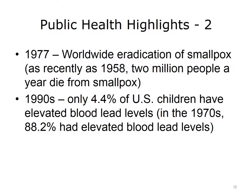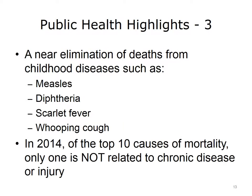In the 1970s, a huge majority — 88% of U.S. children — had elevated levels of lead in their blood, but by the 1990s, public health had reduced that percentage to only 4.4%. Childhood illnesses used to be devastating to the population, but both medical progress and public health efforts have nearly eliminated deaths from illnesses such as measles, diphtheria, scarlet fever, and whooping cough.